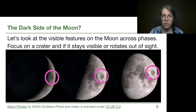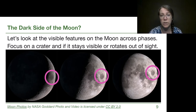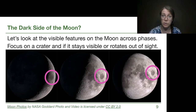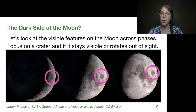Looking at these three images, we can tell that the set of features we see — the craters and dark spots — stays the same over all three pictures and over the entire month. So there is not a single dark side of the moon, but there is a single near side of the moon and a single far side of the moon. We'll be investigating that quite soon.